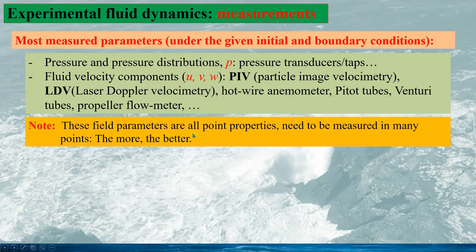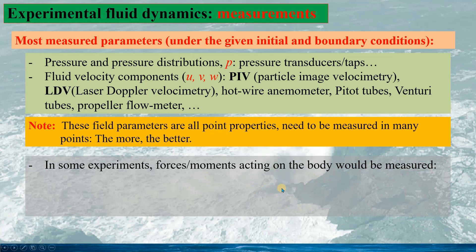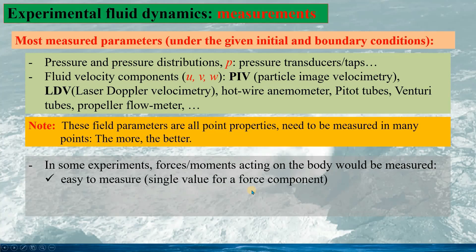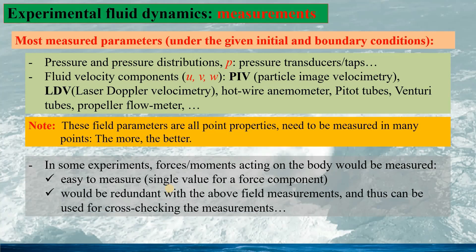It should be noted that these fluid parameters are all point properties, so we need to measure them at many points — in fact, the more measurements the better. And in some experiments for fluid dynamics, forces and the moment acting on the body would be measured if this can be done. Generally this can be easily done to measure the force, since we only measure a single variable value for a force component. This measurement would be redundant with the field measurement and thus can be used for cross-checking.